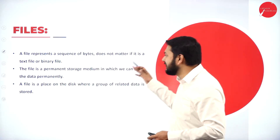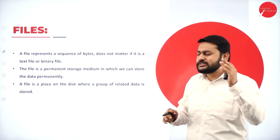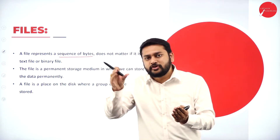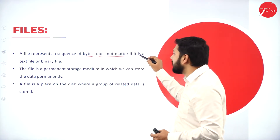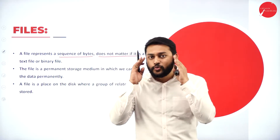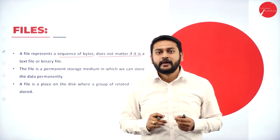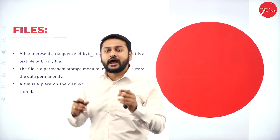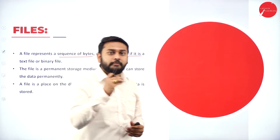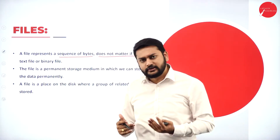First of all, what exactly is a file? A file represents a sequence of bytes — I will be storing the sequence of bytes one by one. There are mainly two different types of files: a text file and a binary file. In a text file, I store text data; in a binary file, I store binary data.